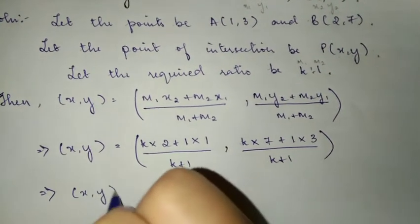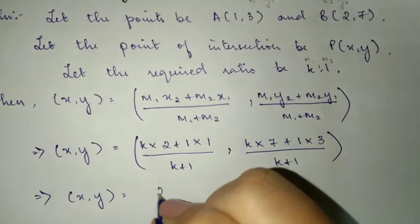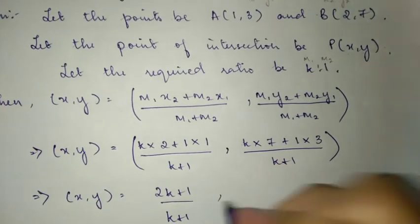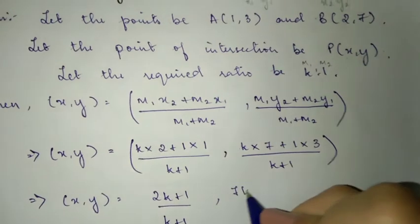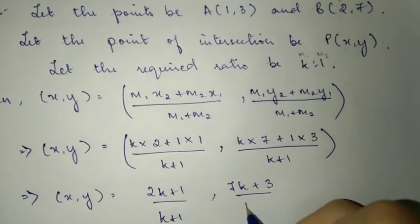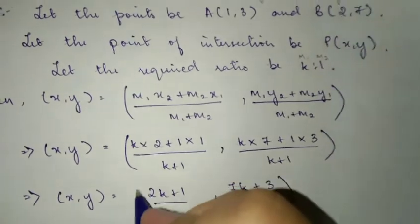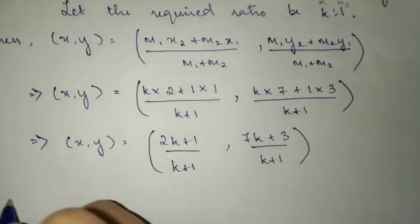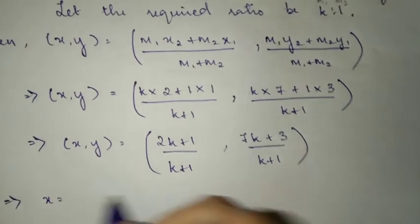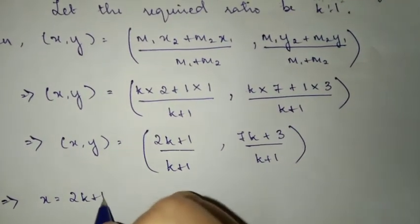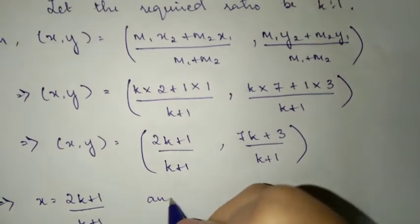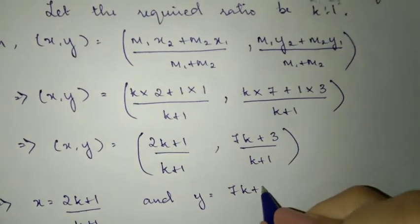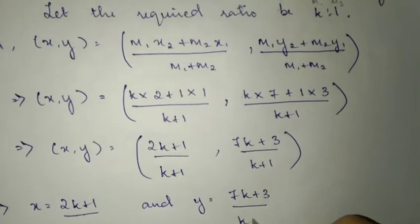For question number 4, we found x and y as numbers, but here we want to equate. So x equals (2k + 1) divided by (k + 1), and y equals (7k + 3) divided by (k + 1).